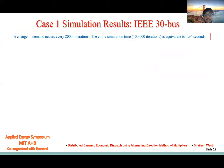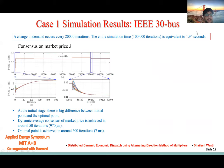Here is the simulation result. The demand changes every 20,000 iterations, and it's carried for 100,000 iterations, and the entire process takes just 1.94 seconds. Here is the consensus on the market price. What we see here is each agent has a different lambda before, and they finally find consensus to one value.